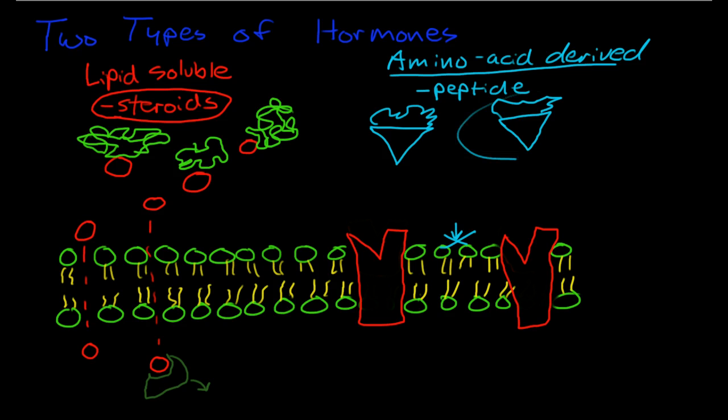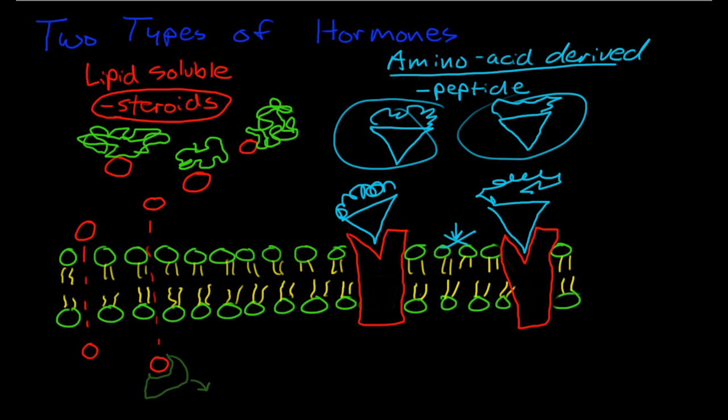Now they cannot pass through the phospholipid bilayer membrane because peptides are all water soluble. So they travel in the blood quite well but they can't cross through the membrane. So they actually bind with protein receptors on the cell membrane. And then they rely on a quote-unquote second messenger system.